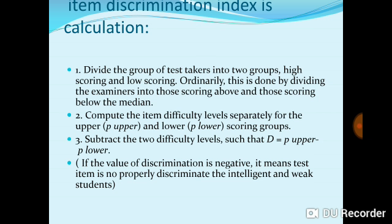Discrimination is denoted by D. The formula is: D equals the difficulty level of the upper group minus the difficulty level of the lower group. If the value of D is negative, it means the test item does not properly discriminate between intelligent and weak students, and we should reject that item.